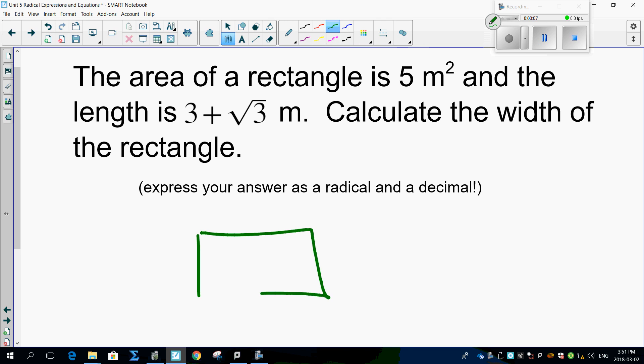So, there's our rectangle. We know that that's 5 meters squared, and 5 meters squared means that it's length times width. So length times width equals 5.